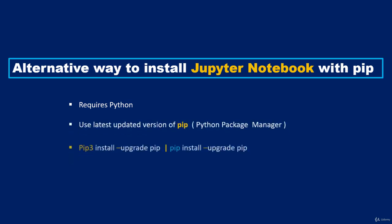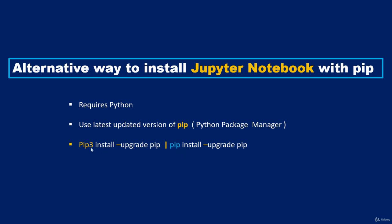If you are using a Mac, note that it comes pre-installed with Python 2.7, so to upgrade pip you type 'pip3 install --upgrade pip'. On a Windows-based computer you don't need pip3 — just type 'pip install --upgrade pip' to upgrade to the most recent version.